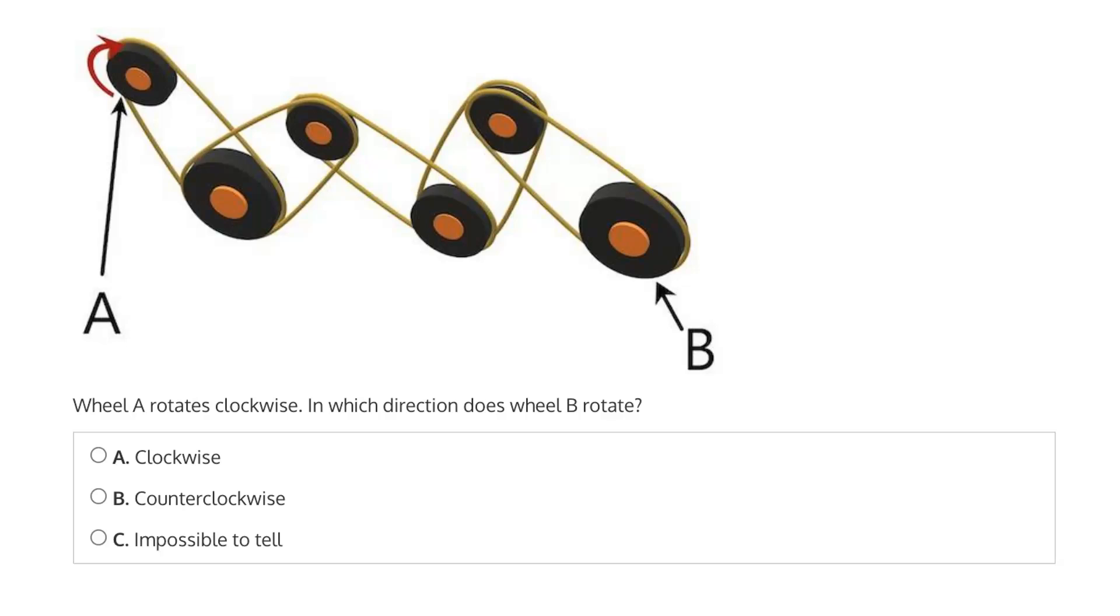This question says wheel A rotates clockwise, and wheel A is this left-most wheel. In which direction does wheel B rotate, and B is this right-most wheel? Is it A, clockwise, B, counterclockwise, or C, it's impossible to tell?